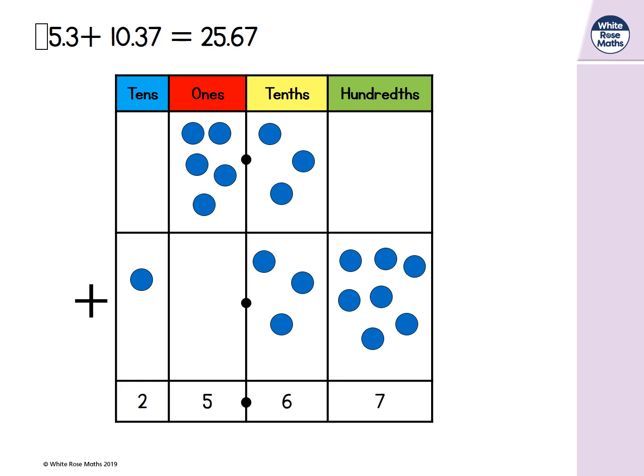Now let's look in our tens column. There is 1 ten in the tens column. But there are 2 tens in our answer. So we need another 1 ten.